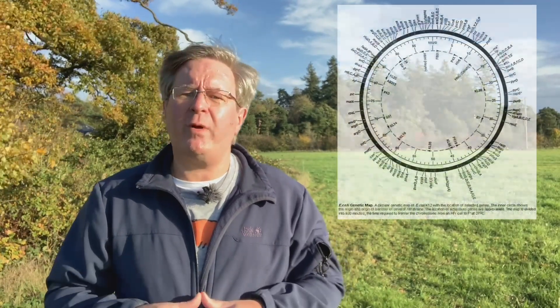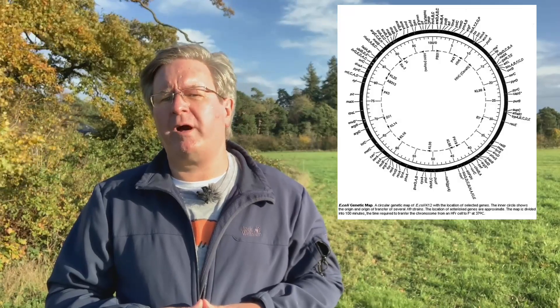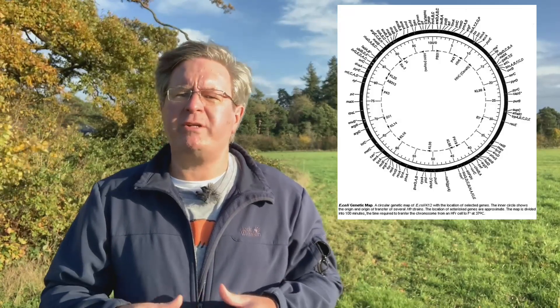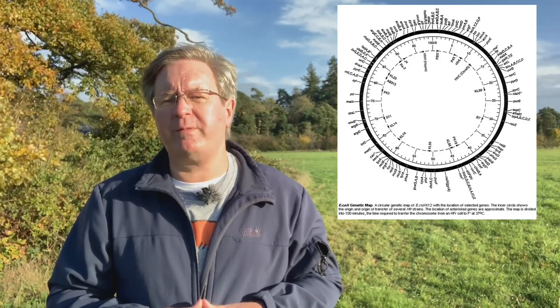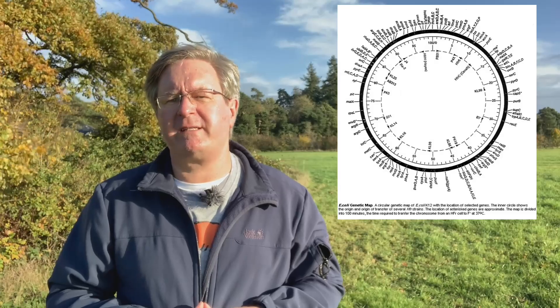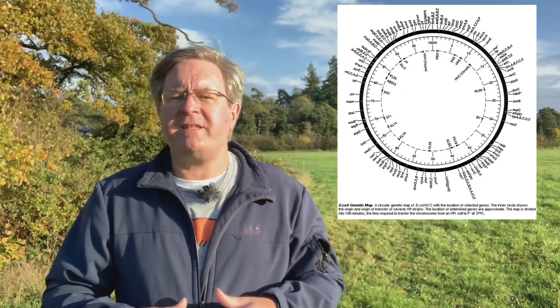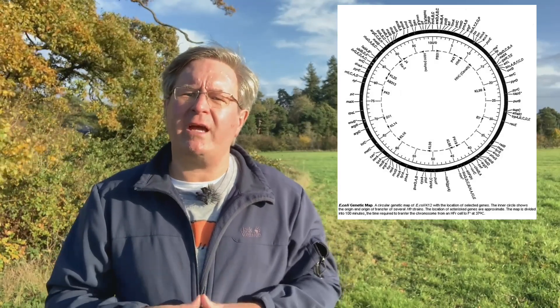For example, the E. coli K12 genetic map can be divided into 100 minutes, which is the time required for the full chromosome to transfer at 37 degrees Celsius. This gives us a map of the relative locations of genes to each other.